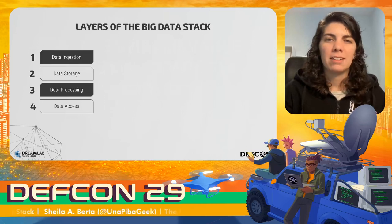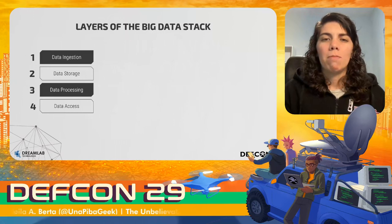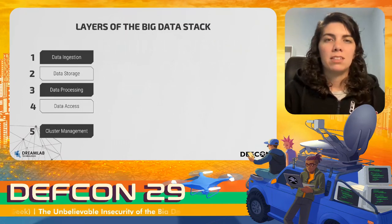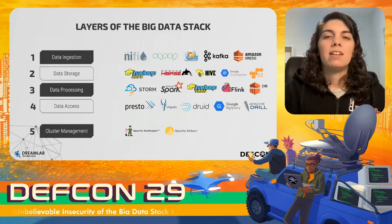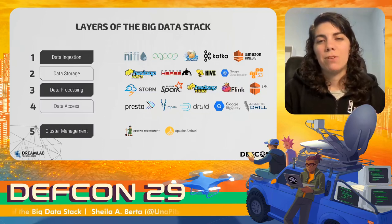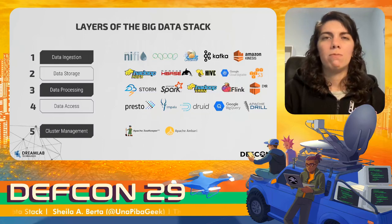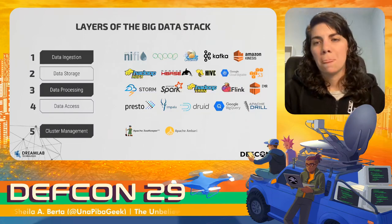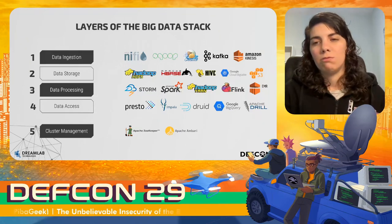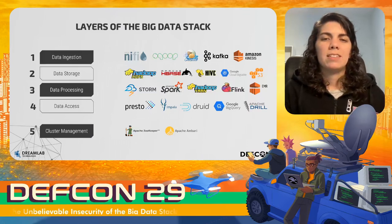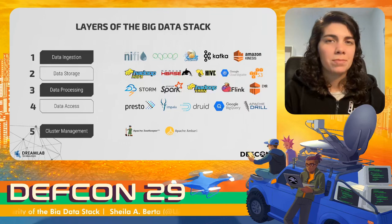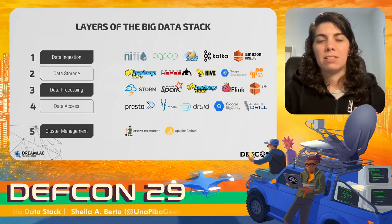The different processes that data goes through are divided into four main layers that comprise the big data stack: data ingestion (transport of information from origins to storage), storage itself, the data processing layer (since the most common approach is to ingest raw information that later needs processing), and finally the data access layer — how users access and consume the information. We also add a cluster management layer, which is not part of the stack itself but is present in all big data infrastructures. For each layer, there is a wide variety of technologies — for example, Hadoop for storage, Spark and Storm for processing, Impala and Presto for data access, Flume and Sqoop for ingestion, and Zookeeper for management.